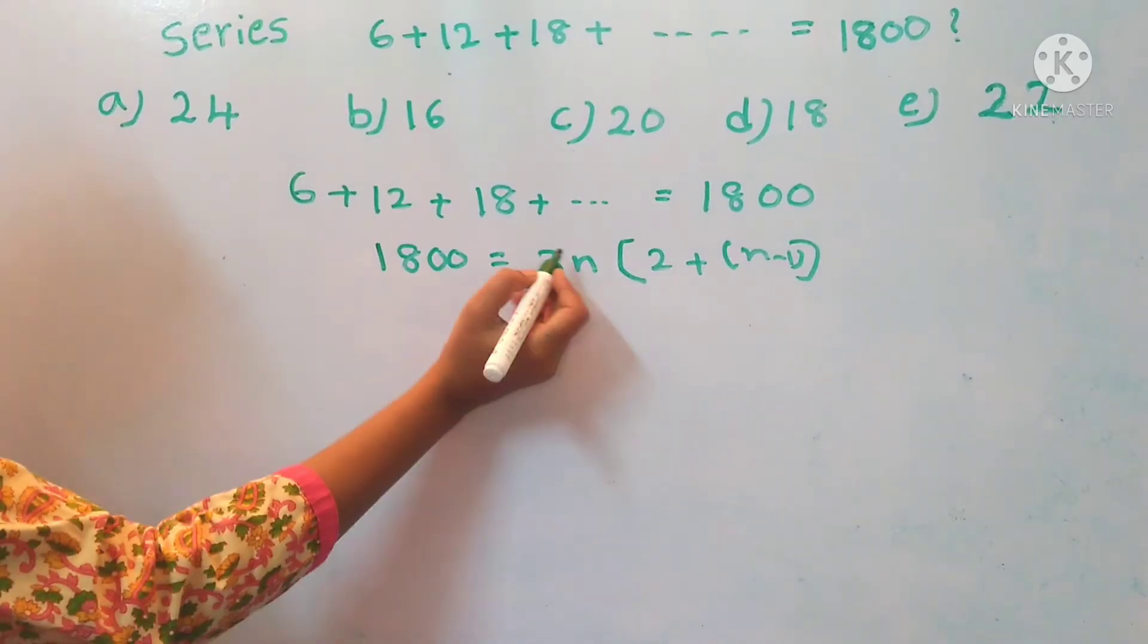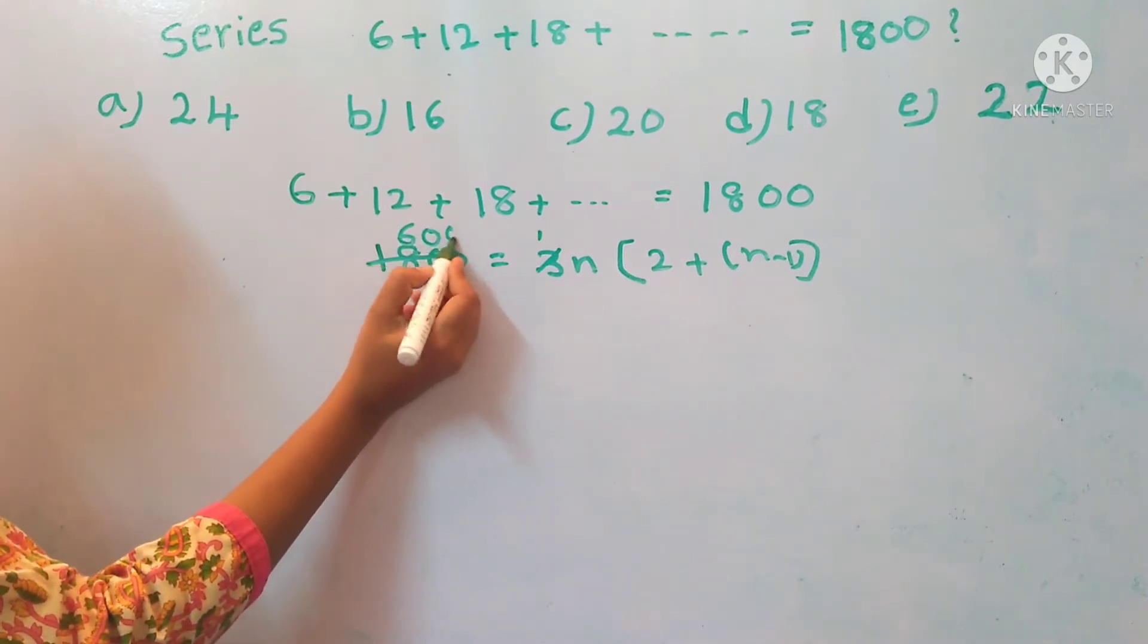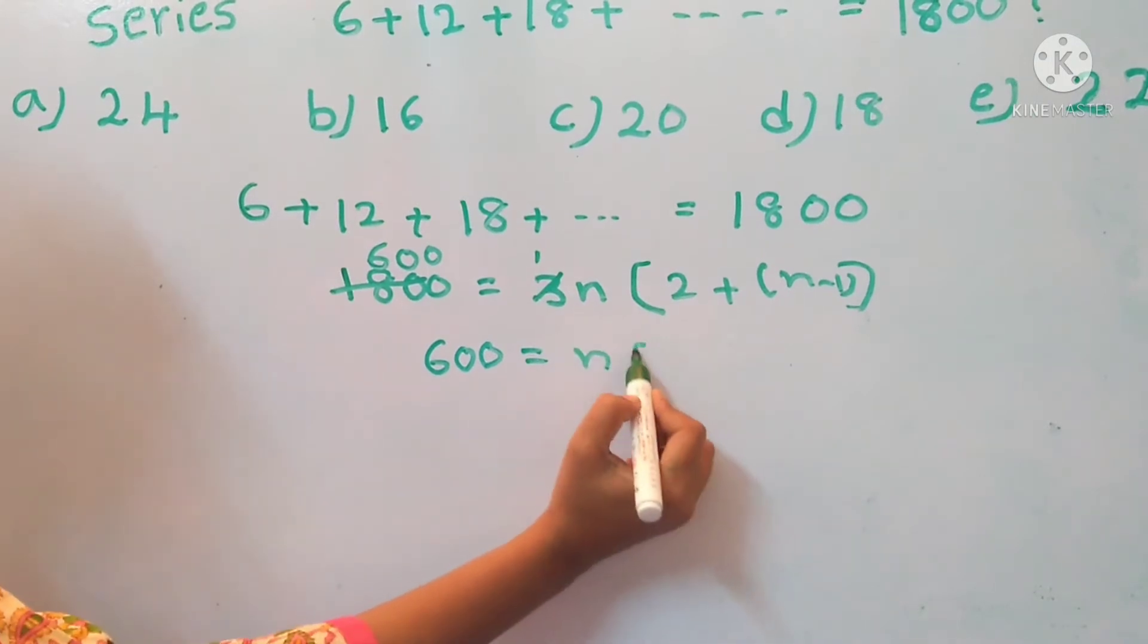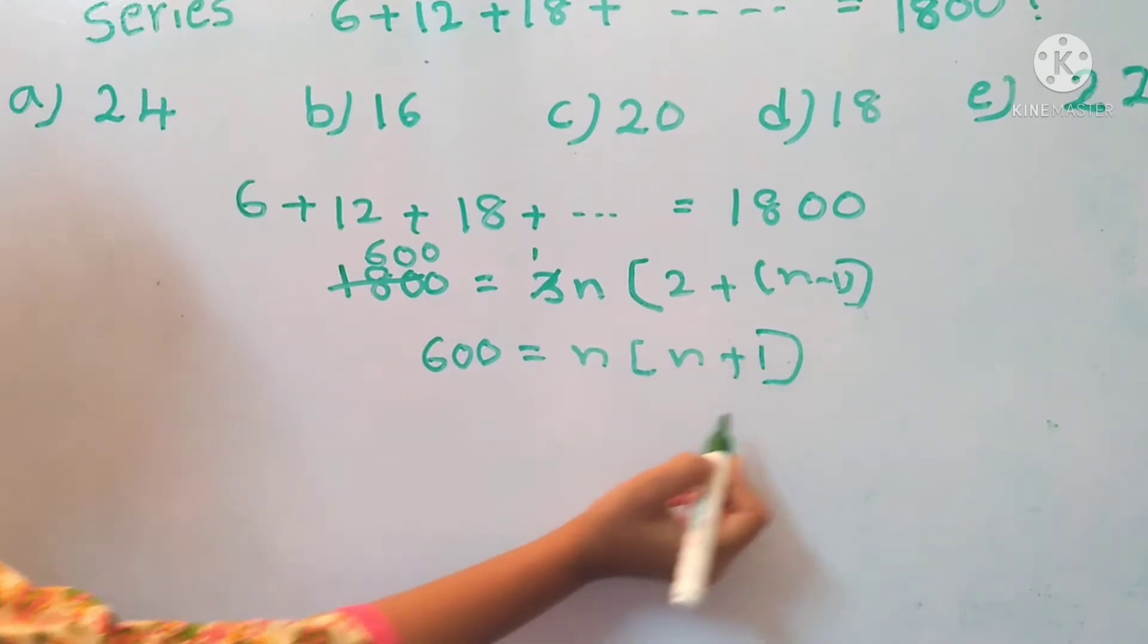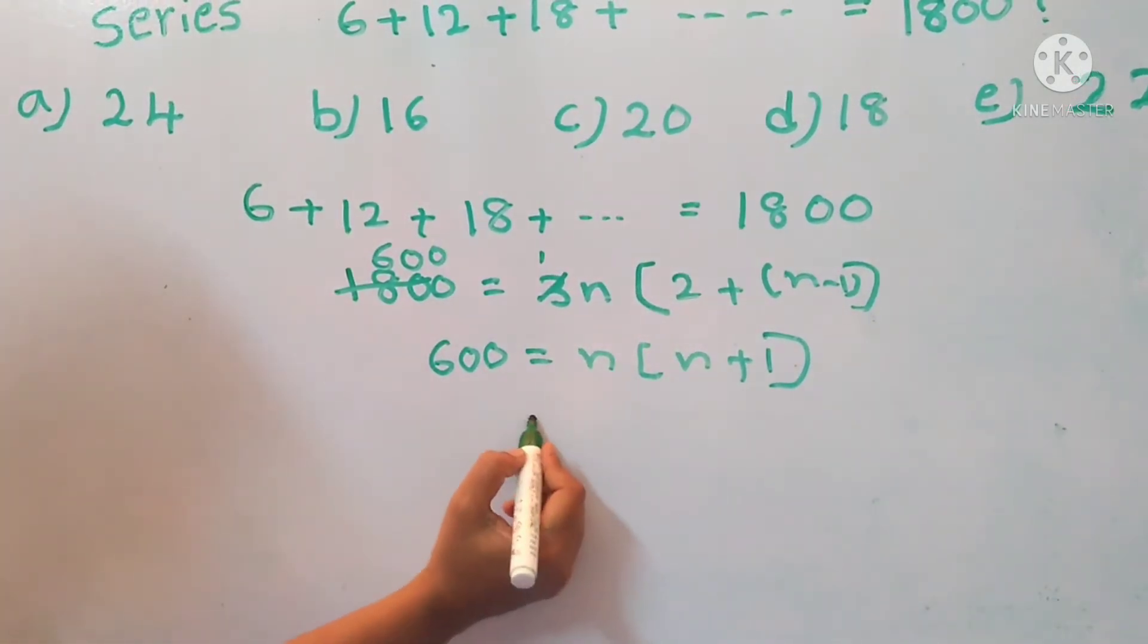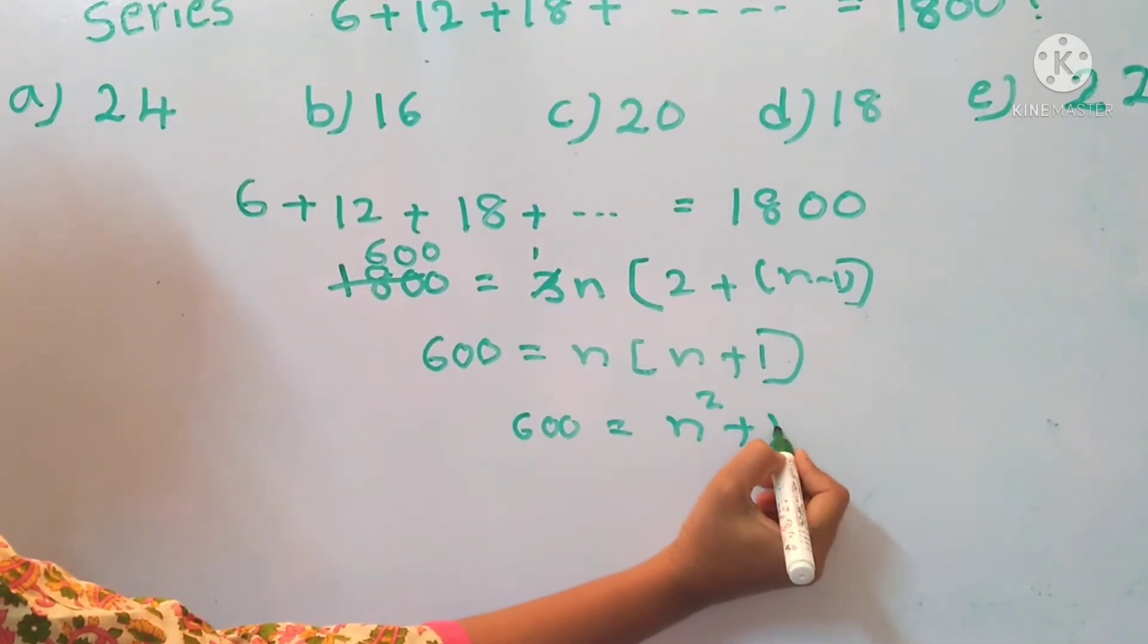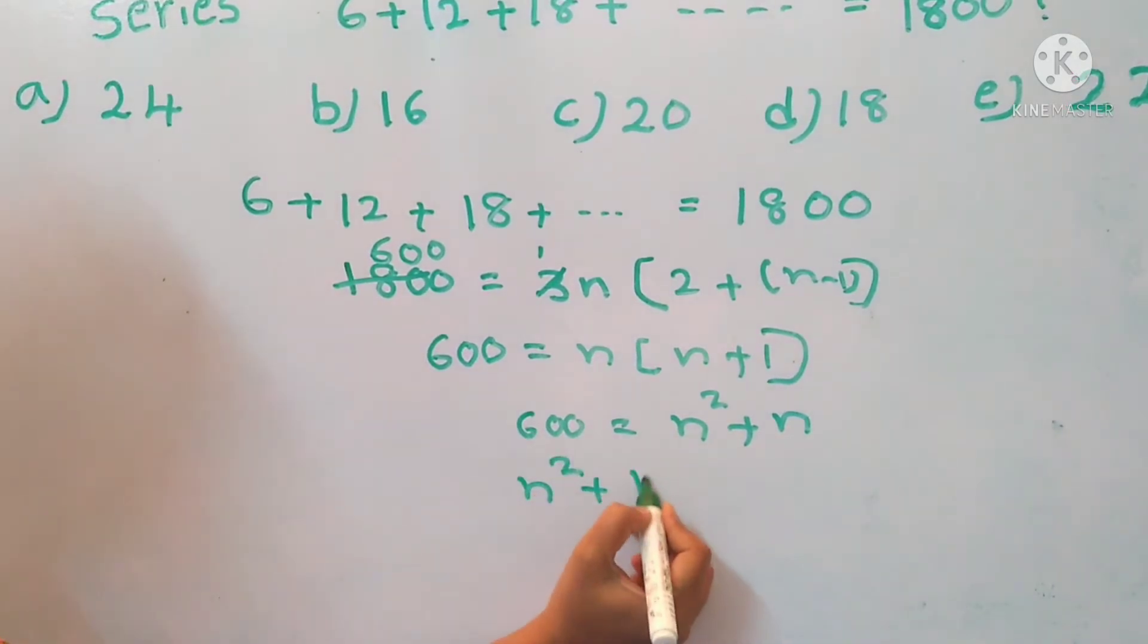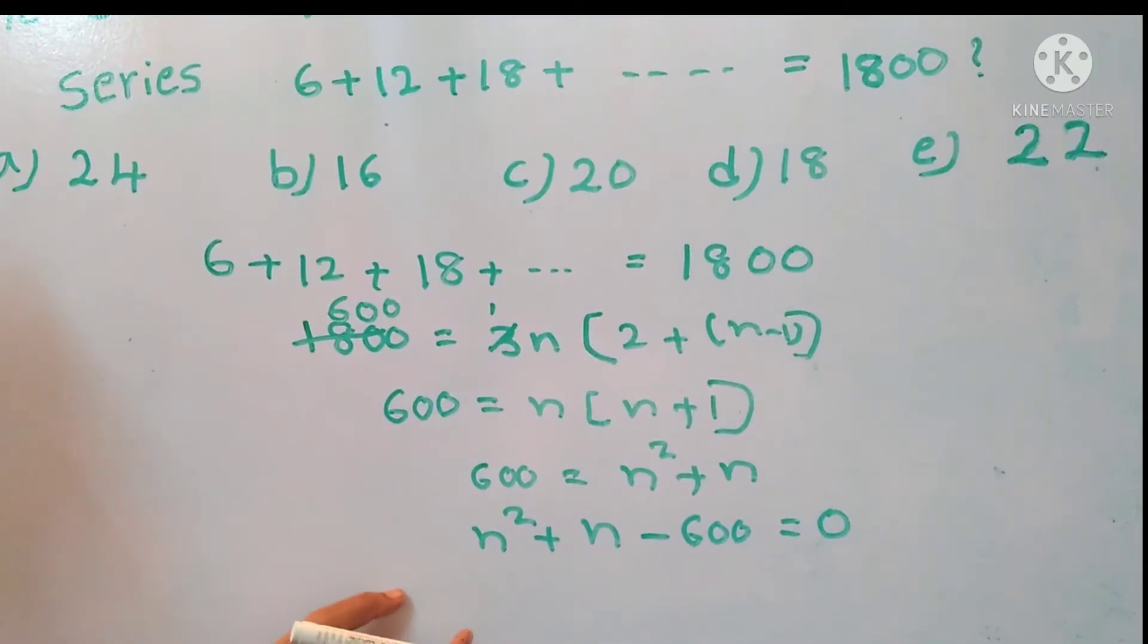So 600 equals n into (n + 1). Now we can write this equation: 600 equals n into (n + 1), so n² + n - 600 equals 0.